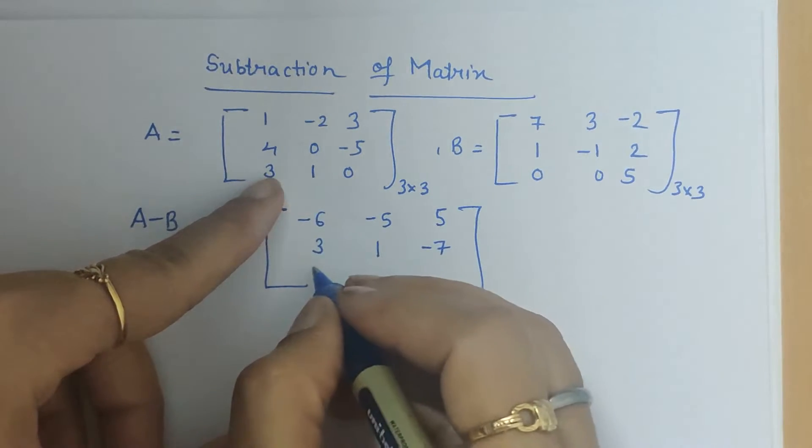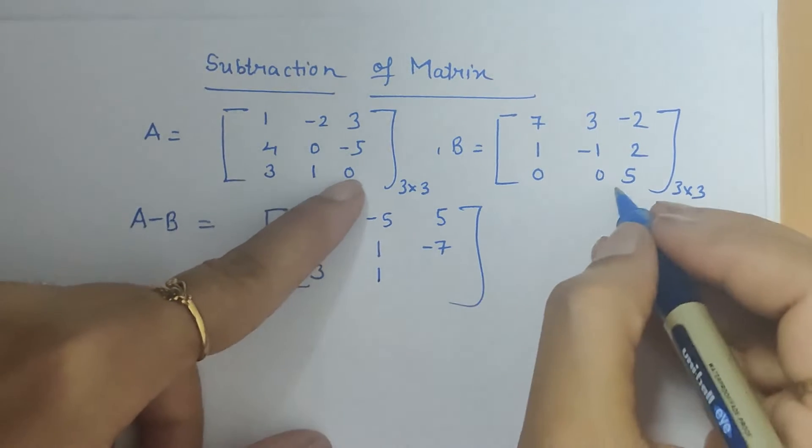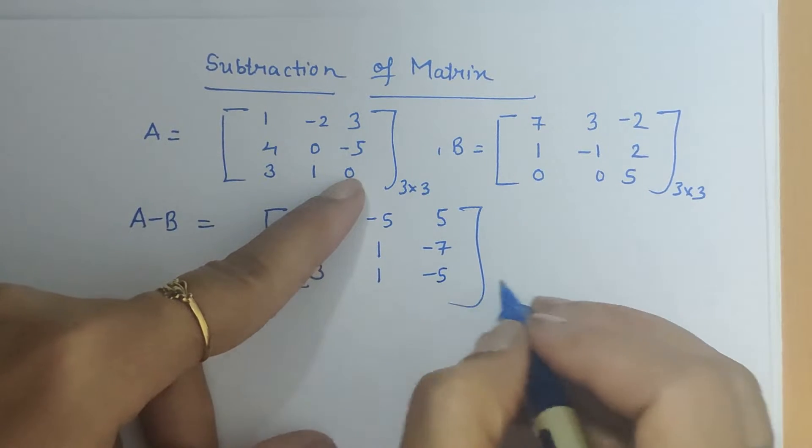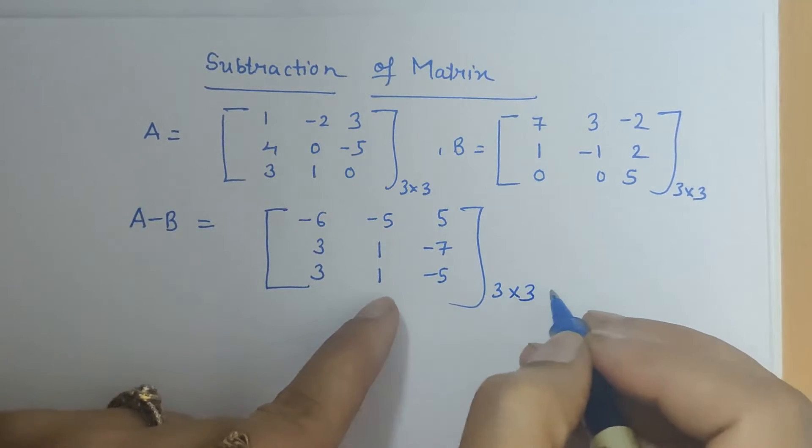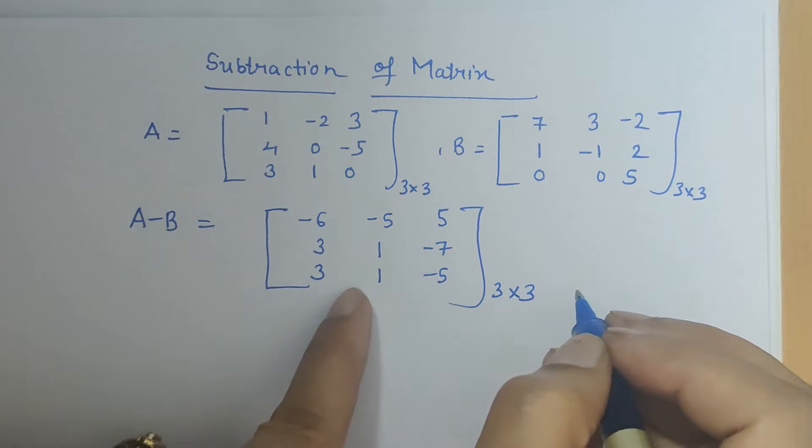3 minus 0 is 3, 1 minus 0 is 1, 0 minus 5 is minus 5 and the resultant matrix is also of the same order. So this is how we do subtraction.